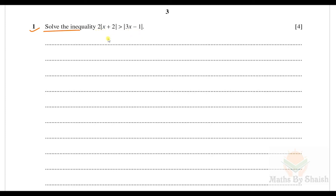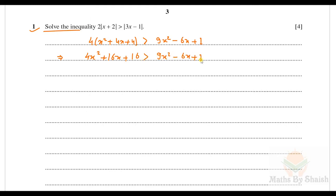Squaring both sides we will get 4 times (x²+4x+4), and the inequality does not change when you square. The right-hand side becomes 9x²−6x+1. So now we will expand: 4x²+16x+16 is greater than 9x²−6x+1, and we can rewrite this as 9x²−6x+1 less than 4x²+16x+16, so that the x² coefficient is positive.